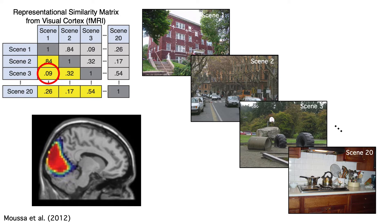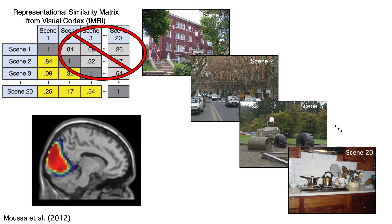With a total of 20 scenes, we'd end up with a 20 by 20 matrix of correlations — the Representational Similarity Matrix, or RSM — because it expresses the pattern of similarity in the neural representations of the 20 scenes. We'd get a separate RSM for each subject. The correlation between a given scene and itself is always 1, so we ignore the diagonal. The upper and lower triangles are mirror images, so we ignore the upper triangle. Some researchers prefer to use a Representational Dissimilarity Matrix, which is just 1 minus the correlation, but you get exactly the same results either way.